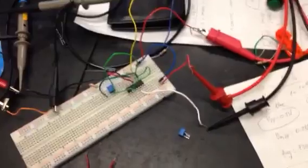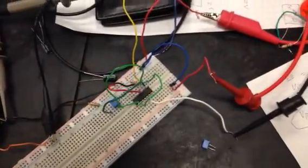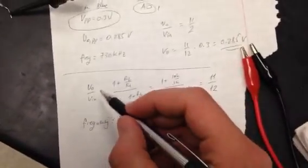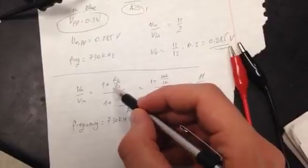R2 10k, R1 10k, and a load of 10k. So here is our calculation: Vout over Vin of...